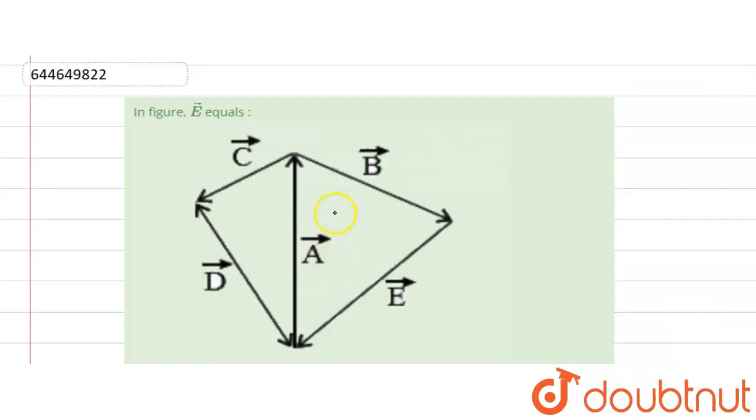This is the approach. For the given figure, using triangle law of vector addition, minus a is equal to b plus e. Here we can write, for the given figure using triangle law of vector vector addition, so here it is equal to a vector is equal to b plus e.